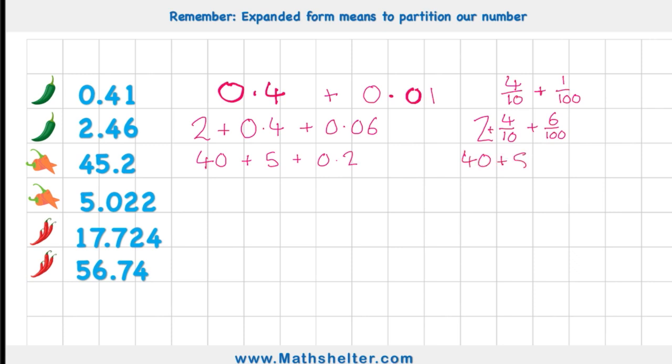5.022 would be 5 whole, 0 tenths so I don't need to worry about that, 2 one hundredths which would be 0.02, and then 2 one thousandths which would be 0.002. Or looking at it with fractions, I'd have 5 whole added to 2 one hundredths, added to 2 one thousandths.